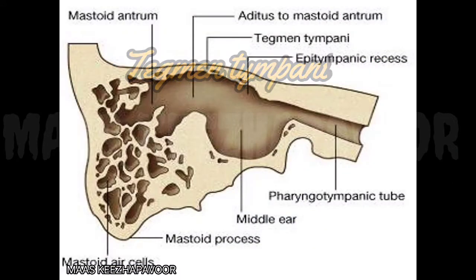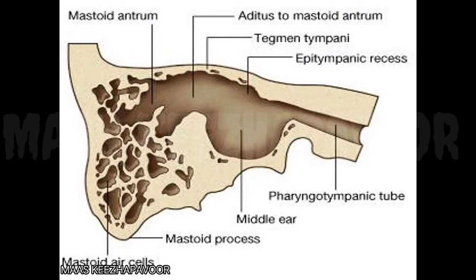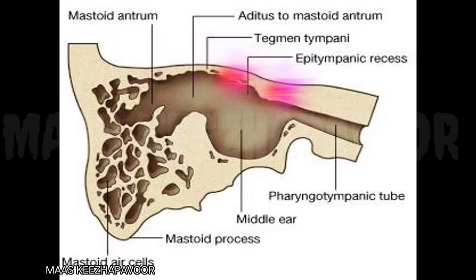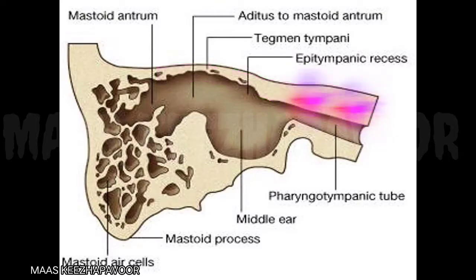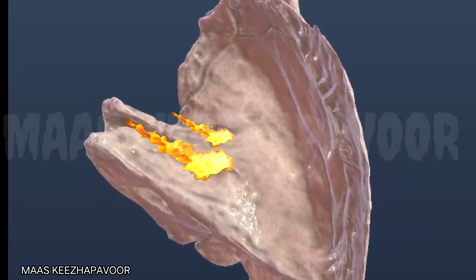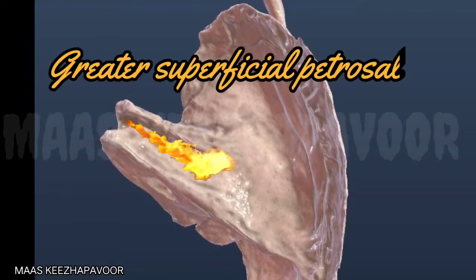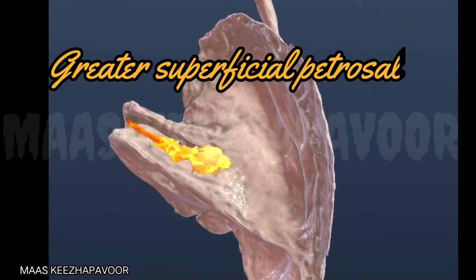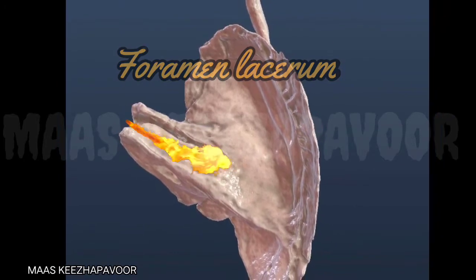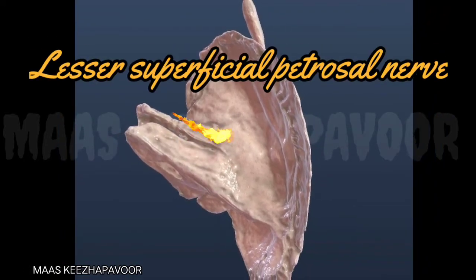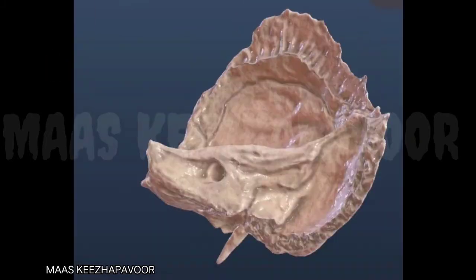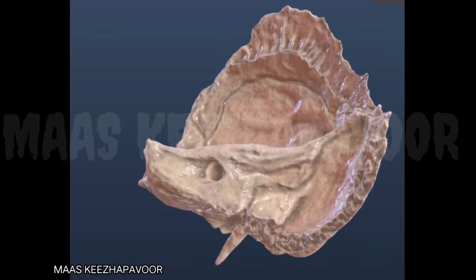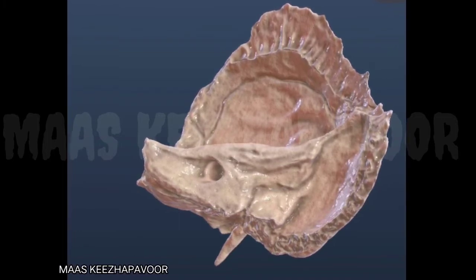The tegmen tympani forms the roof for the mastoid antrum, middle ear cavity and canal for tensor tympani, from posterior to anterior. There are two hiatuses in the anterior surface, one for the greater superficial petrous nerve leading to the foramen ovale.